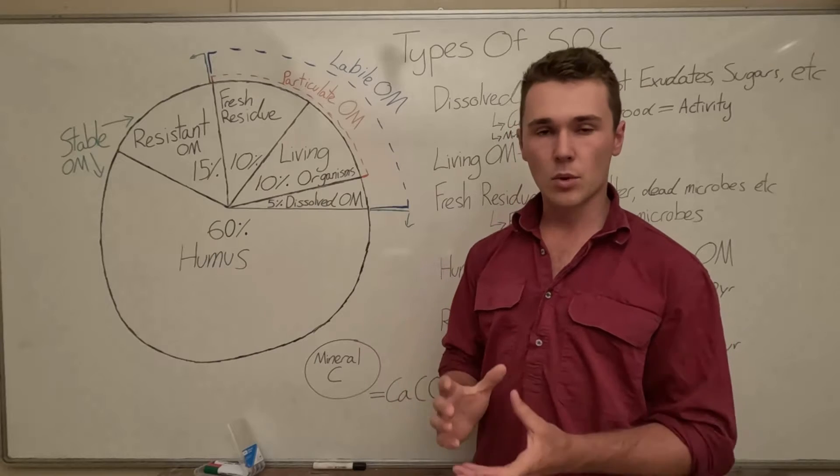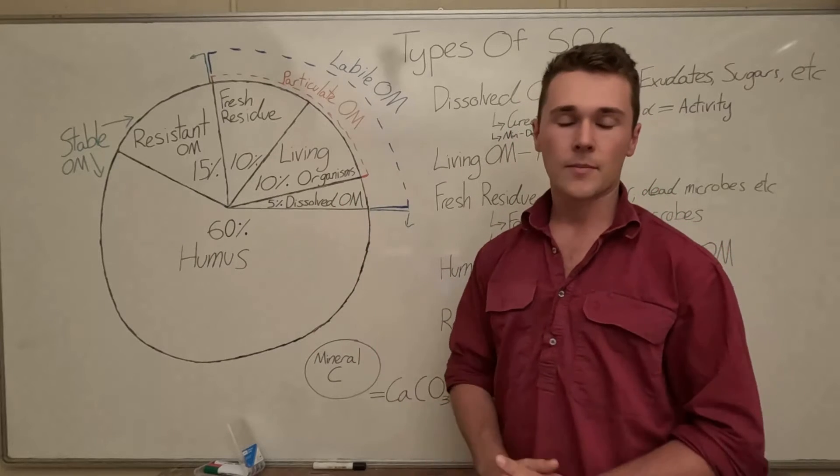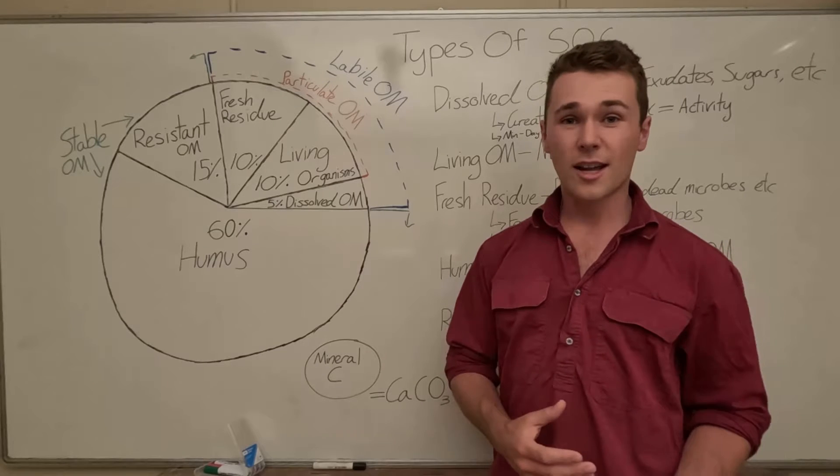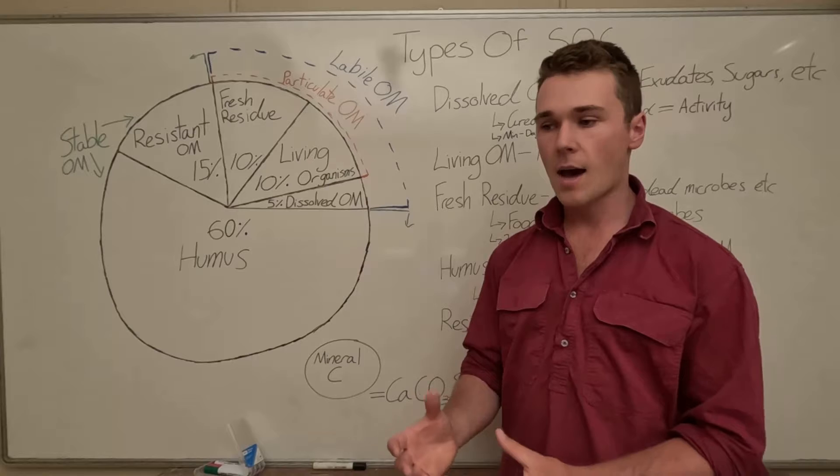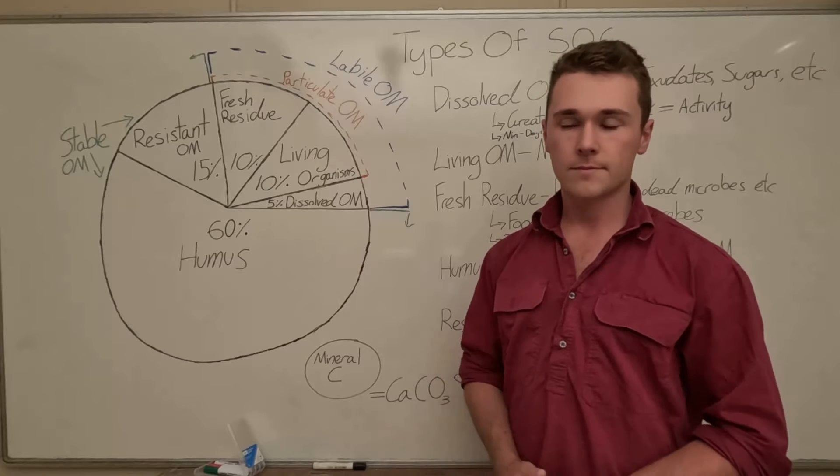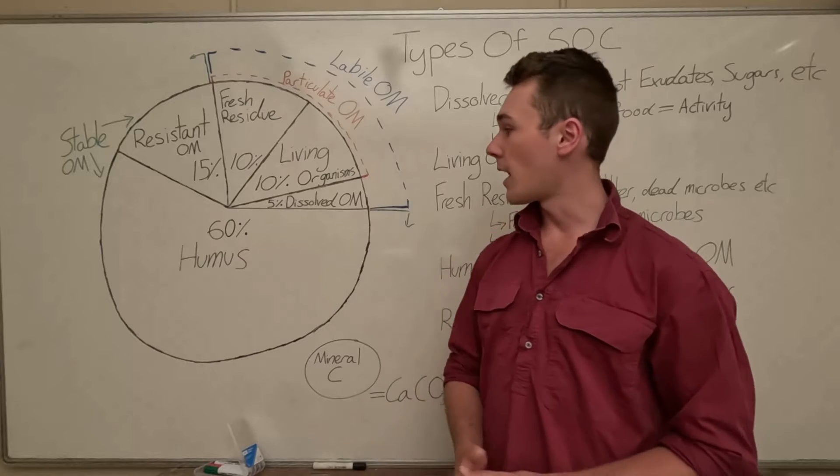So let's start off with the smallest component of our soil organic carbon and that is our dissolved soil organic matter. Now these are things like root exudate which roots produce to feed microbes, it contains carbon that can dissolve in water. So this can include things like sugars which are used as food for our microbes.